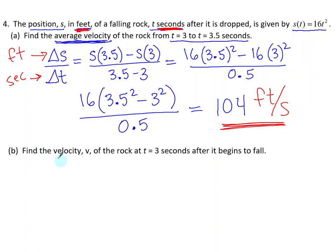Part B: Find the velocity, v, of the rock at t equals 3 seconds after it begins to fall. Notice this was a rate of change over a time interval, that's the average rate of change, whereas this is the rate of change at one point in time.